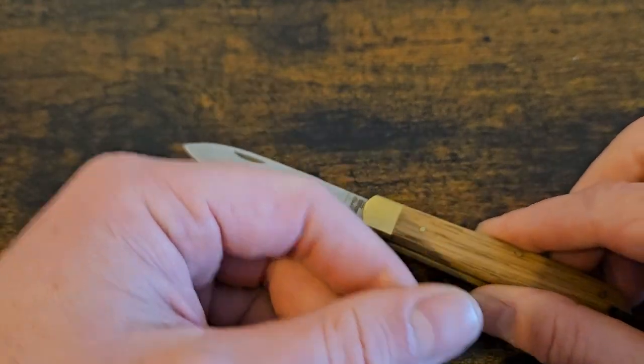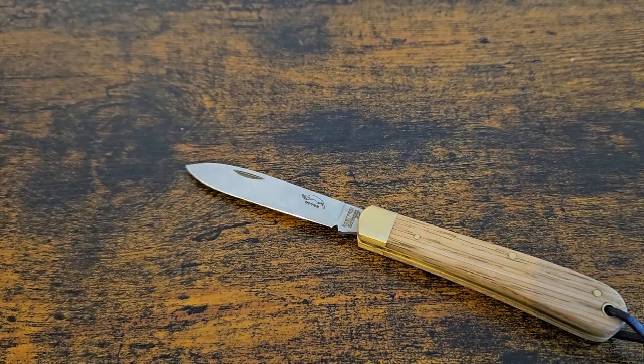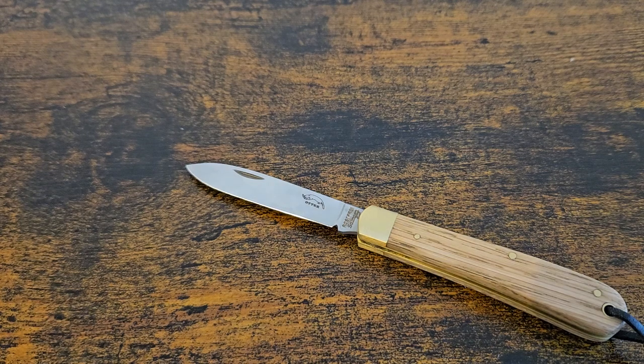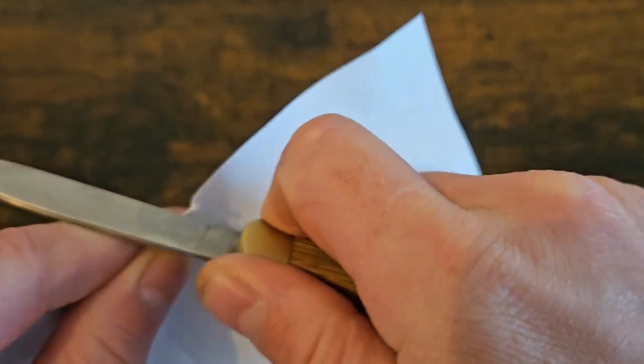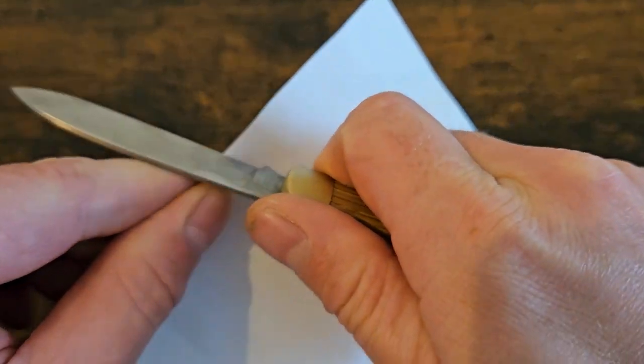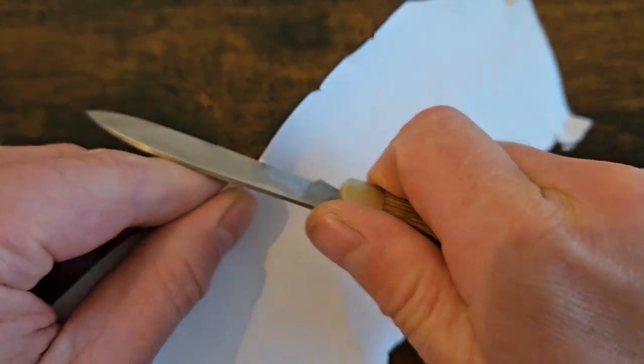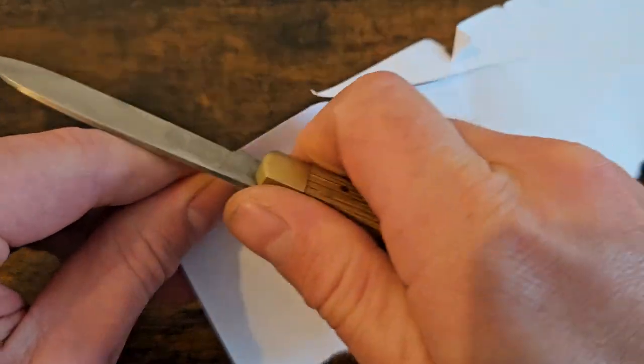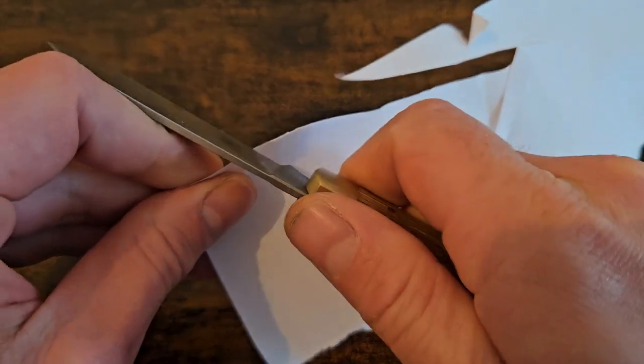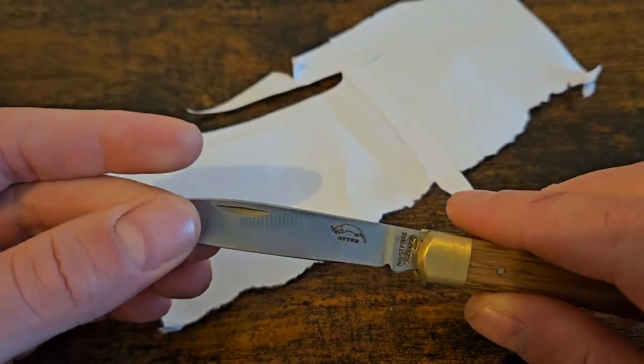Shall we do a cut test or something? A little bit of paper around here. Let me use a bit of this. Yeah, what do you think, guys? I'm very happy with it. Don't let me down, Otter. Don't let me down, mate. Yeah, it needs a strop. I don't think it's the knife, I think it's the person. But yes, very nice. Very impressed.